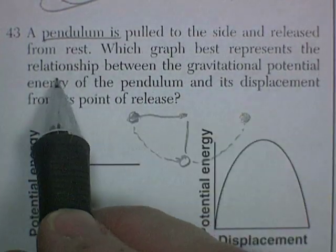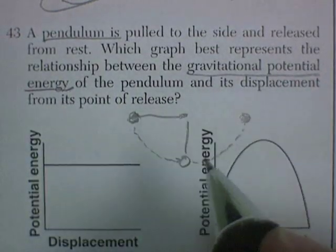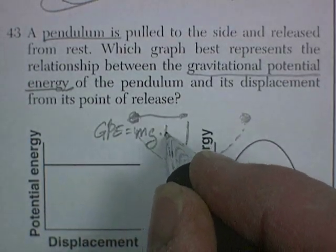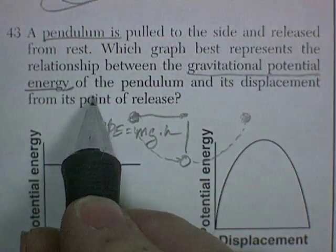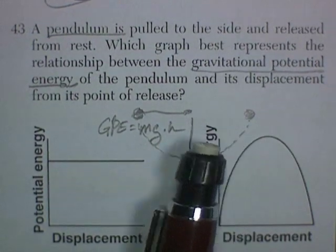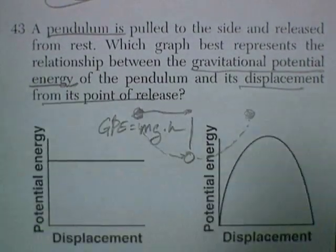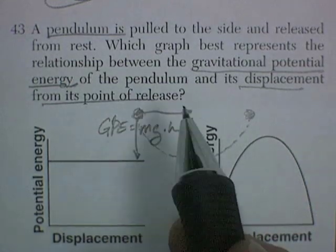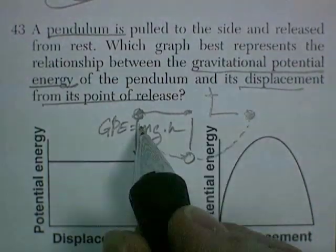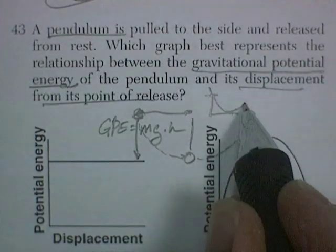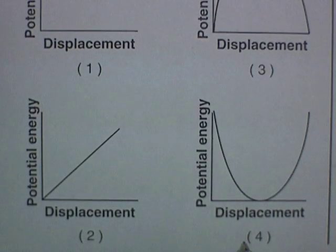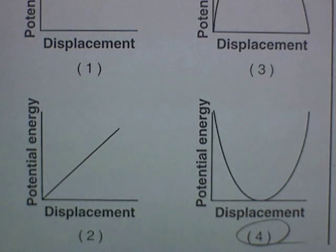So let's read the question. Which graph best represents the relationship between the gravitational potential energy? Well, gravitational potential energy is the weight, mg, times the height. The gravitational potential energy of the pendulum and its displacement from its point of release. Well, displacement from its point of release is talking about its height. So it starts here so it has its maximum height or its maximum potential energy. And it'll start getting closer and closer to zero potential energy. But then it'll start gaining potential energy again. So let's go see if we can find that graph. And sure enough, it's choice 4. It's always nice knowing what the graph is going to look like and then finding it.